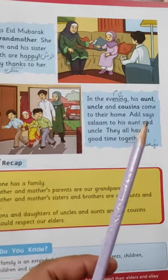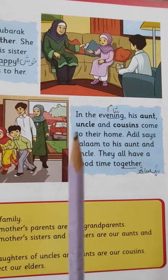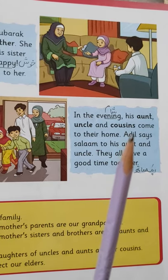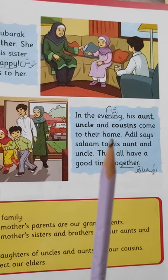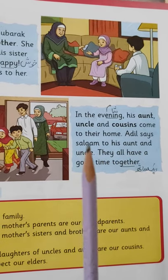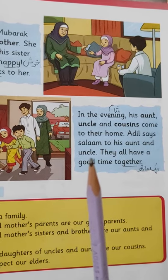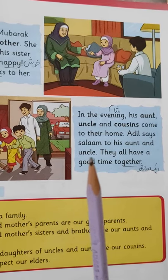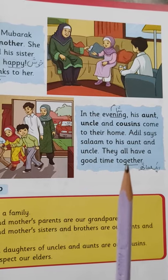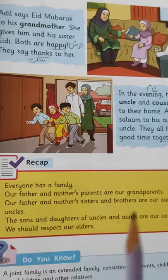In the evening — شام میں — his aunt, چچی, uncle, چچا, and cousins, ان کے بچے, come to their home. Aadil says salaam to his aunt and uncle — عادل نے اپنے چچا اور چچی کو سلام کیا. They all have a good time together — انہوں نے ایک ساتھ بہت اچھا وقت گزارا.